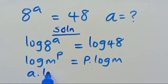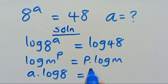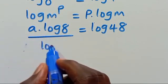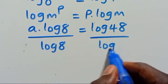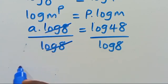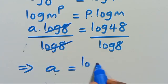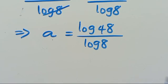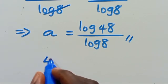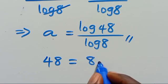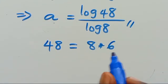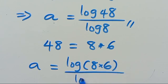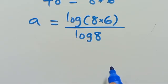So a times log 8 equals log 48. Dividing both sides by log 8, we have a equals log 48 divided by log 8. You can leave it as this, but to simplify further, we note that 48 equals 8 times 6, so we have a equals log of 8 times 6, divided by log 8.